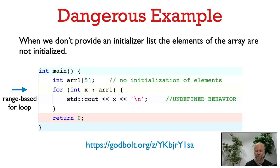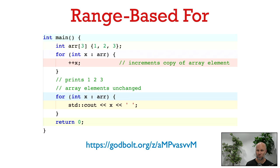I'm also using a different kind of for loop here — this is called a range-based for loop. This says that from the first element of the array to the last, we copy each element into x and we print it out. It's important to note that x is just going to be a copy of the array element. Therefore, any change that we make to x will not affect the array itself. So when we increment x in the body of the loop, x is just a copy, and the array still prints out one, two, three — the original values.